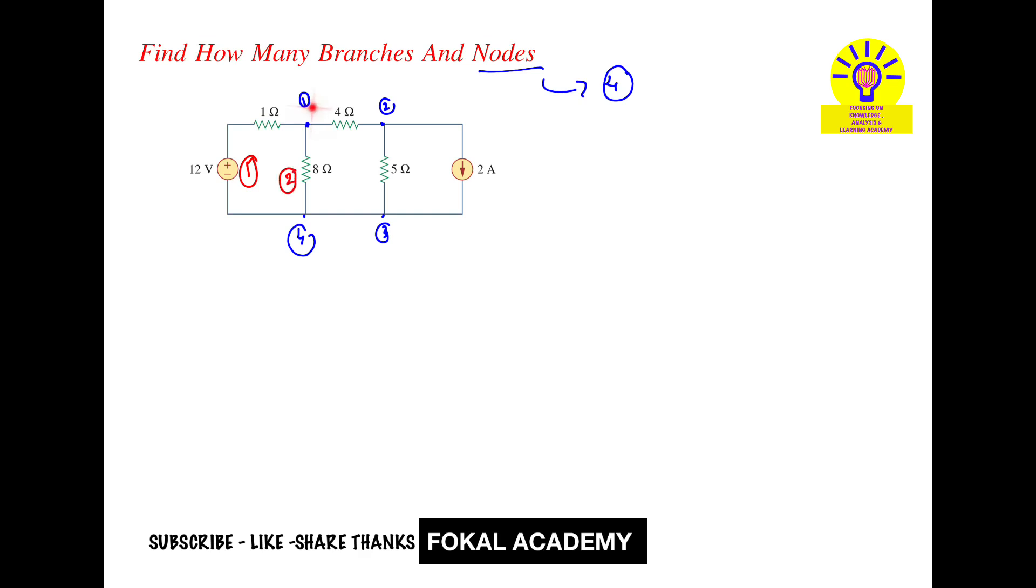Next, between one to two, this is one branch. This is three. Next here, four to three, this is another branch. This is the fourth branch.